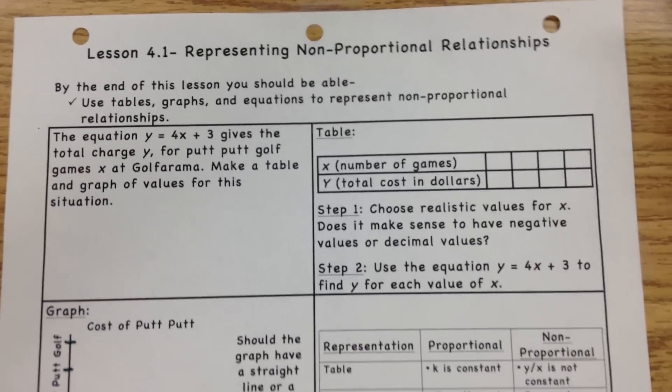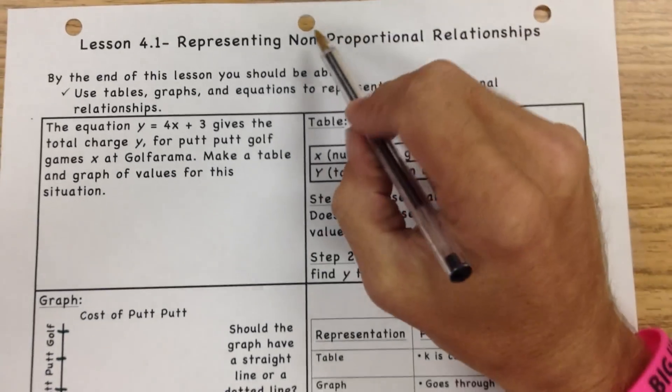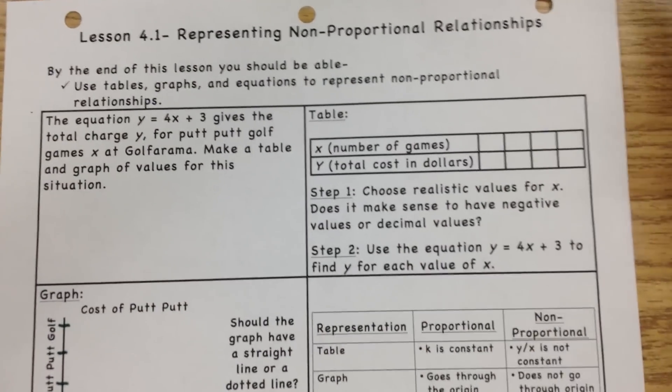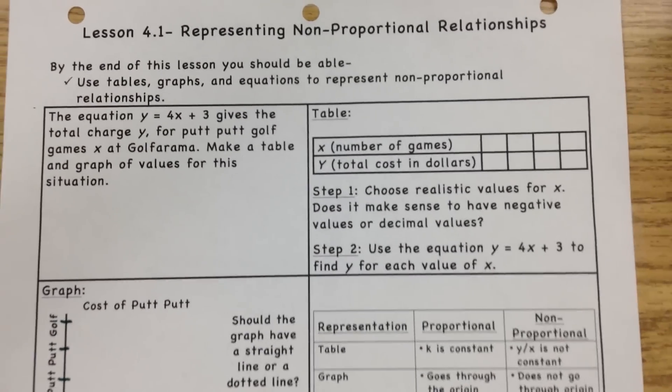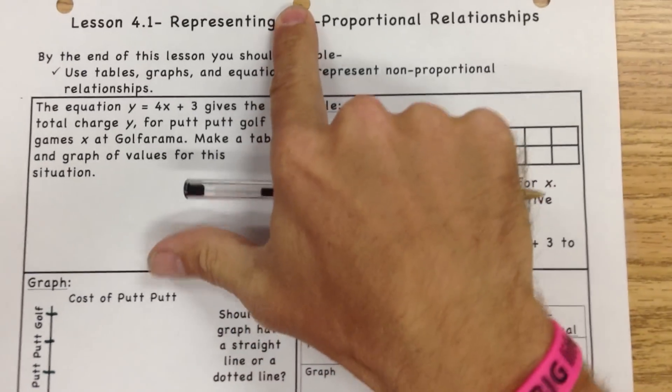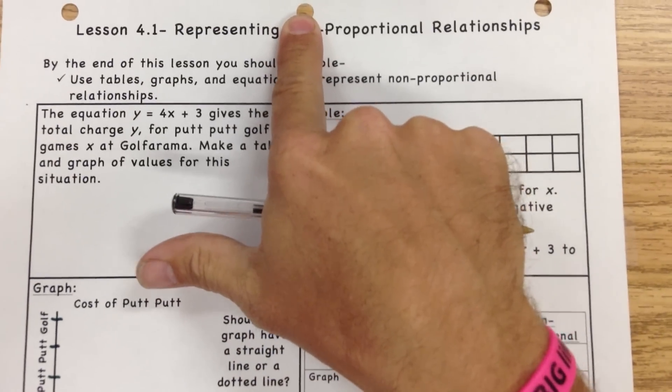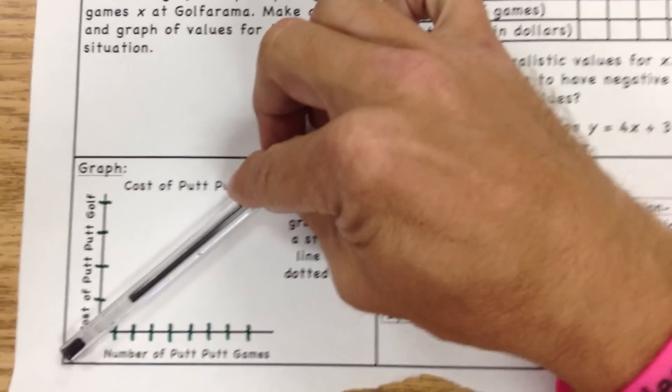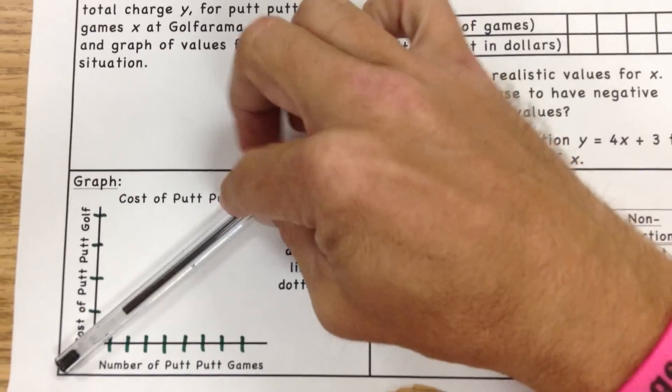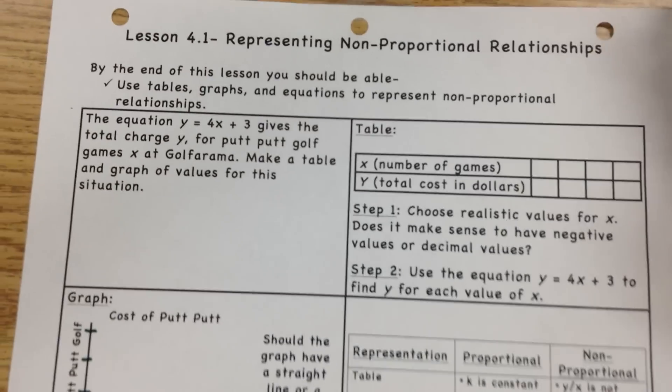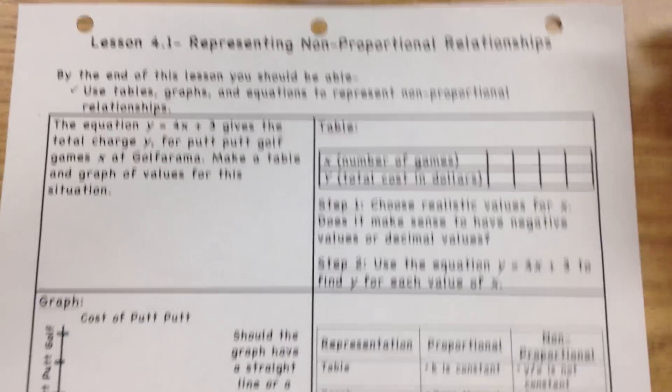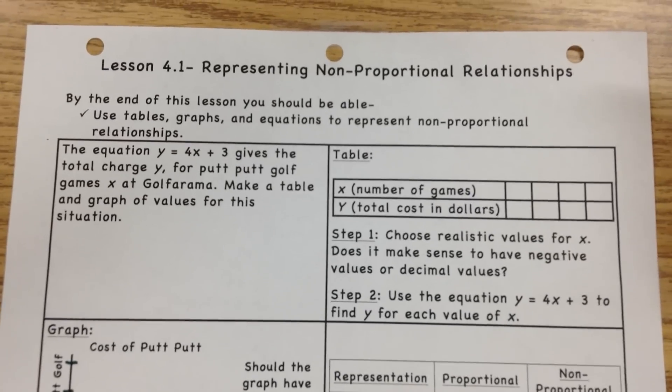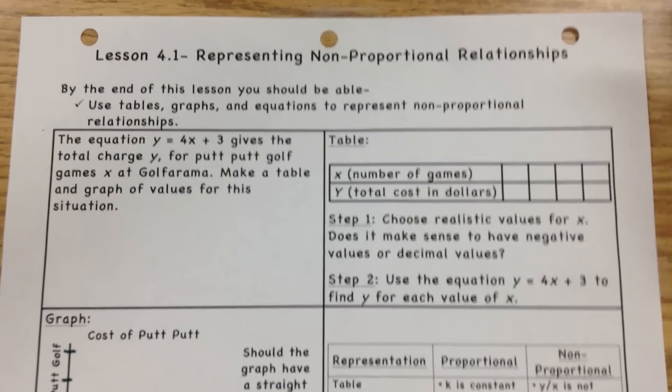We're going to talk about how to represent non-proportional relationships with graphs, charts, and tables. Up until this point we've been talking about proportional relationships. Remember those were graphs that went straight through the zero-zero point, the origin, and always created a straight line. Today they're not going to do that, so we're going to call them non-proportional. They still will be straight lines, also called linear equations, but they're just not going to go through the origin.